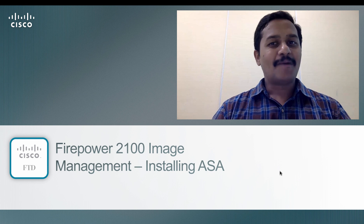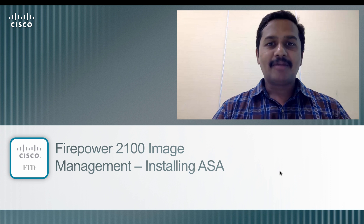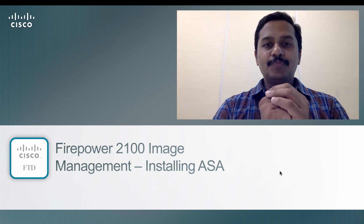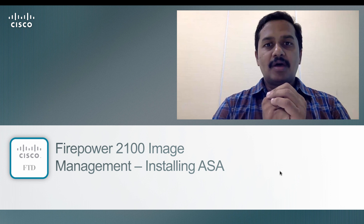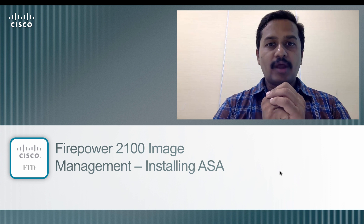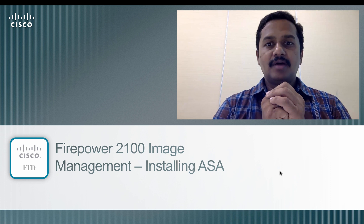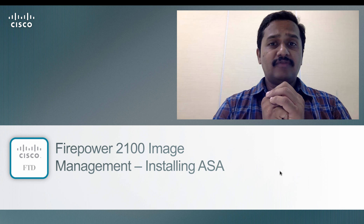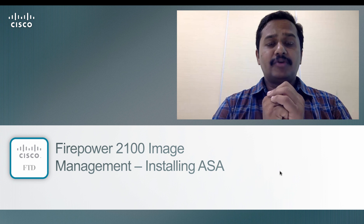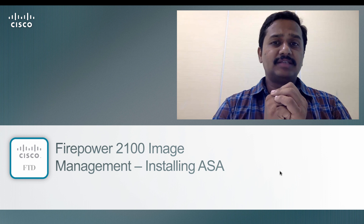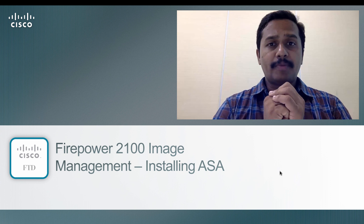Hello, welcome back to Firepower Threat Defense training video series. I'm Nandakumar. In this video I'm going to show how to install or re-image Firepower 2100 from FTD to ASA. As you all know, Firepower 2100 series supports both FTD and ASA — you could re-image the box from either ASA to FTD or FTD to ASA depending upon your requirement.